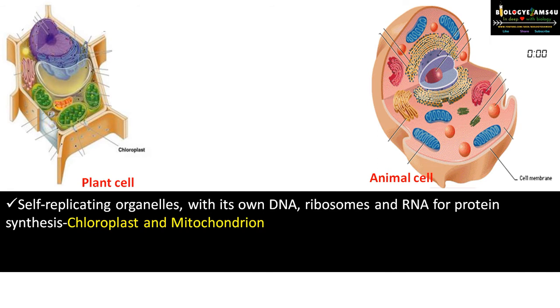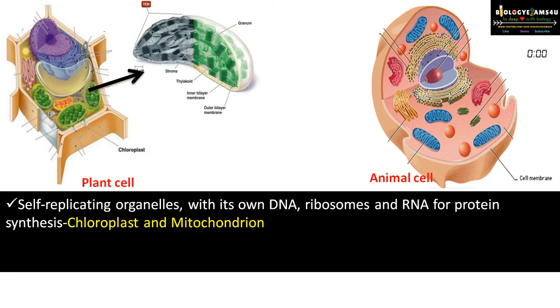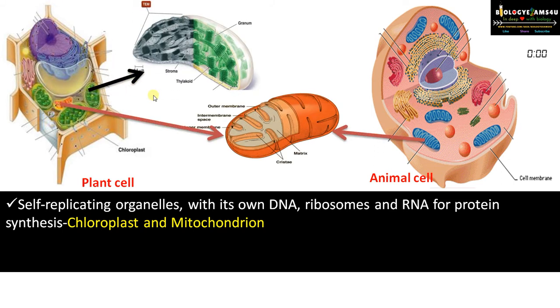Chloroplast and mitochondrion are the semi-autonomous organelles. In plants, both chloroplast and mitochondrion are present, whereas in animals only mitochondrion is present.